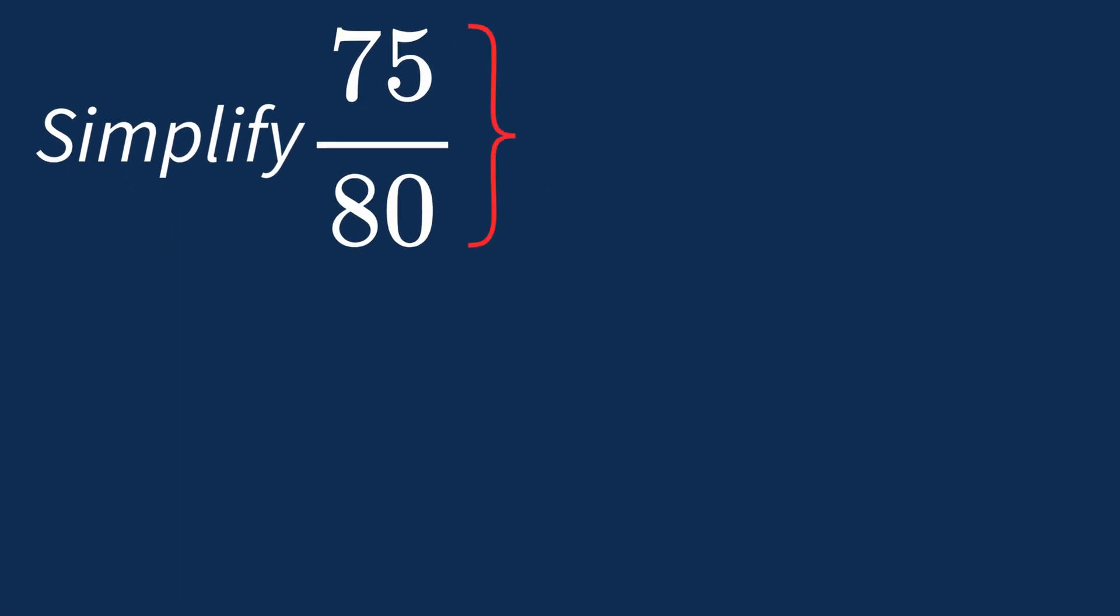To simplify 75 over 80, we need to look for the common factors between the top number, the numerator, and the bottom number, the denominator.